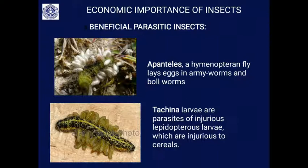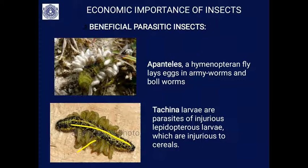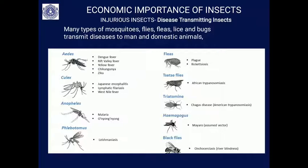Some parasitic insects also indirectly help farmers. A hymenopteran fly lays eggs on army worms — a dangerous pest — and on bollworms, the dangerous pest on cotton plants. Similarly, tachinid larvae are parasitic on injurious lepidopteran larvae: the tachinid larvae feed on injurious caterpillars, thereby indirectly helping the farmer.